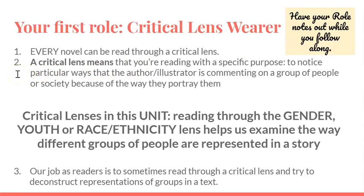A critical lens means that you're reading with a specific purpose — to notice particular ways that the author or illustrator, if it's a graphic novel or even a children's book like The Princess and the Pony, is commenting on a group of people or society because of the way they portray them. In this lit circle unit, as you're reading your book with your group, you are going to choose if you read with a gender lens, a youth lens, or a race/ethnicity lens, and it can help you examine the way the author is portraying that type of person in the story. Your job is literally for the rest of your life — ever since I studied how to do this, it's something I can't turn off, so hopefully it's something you keep with you.